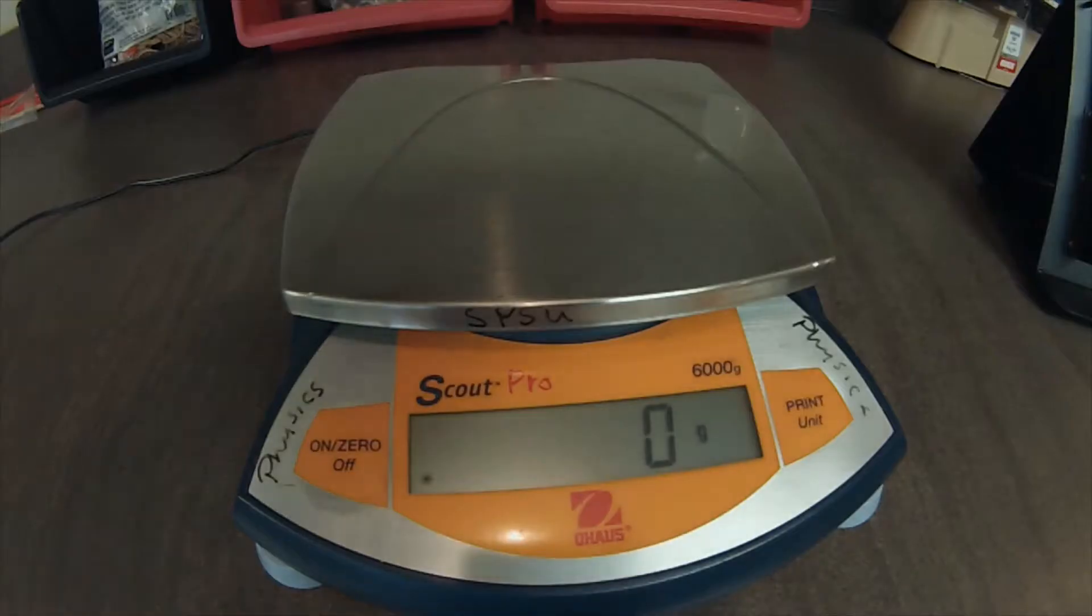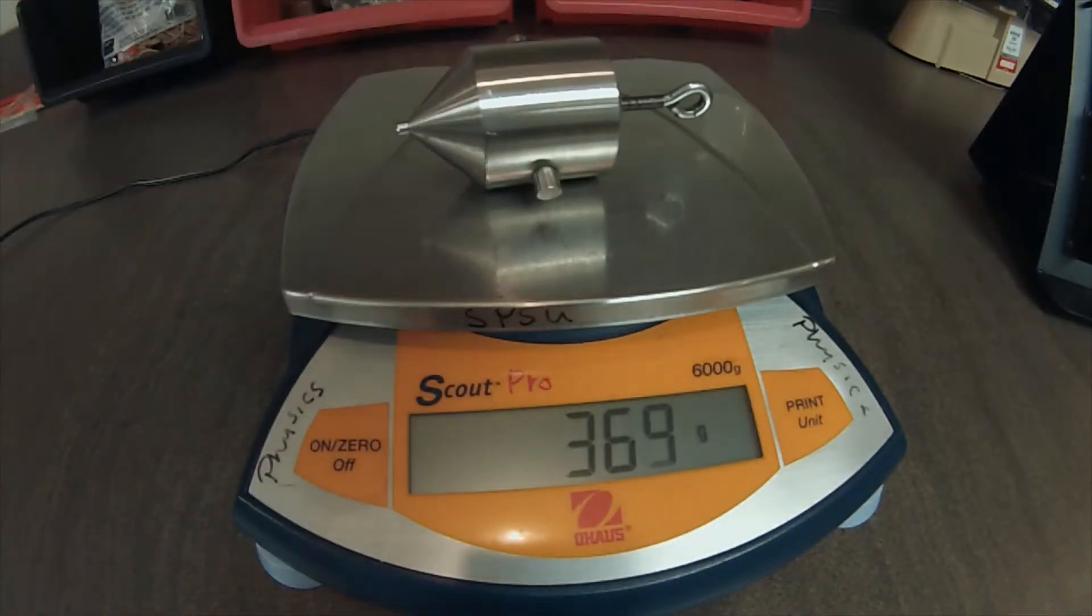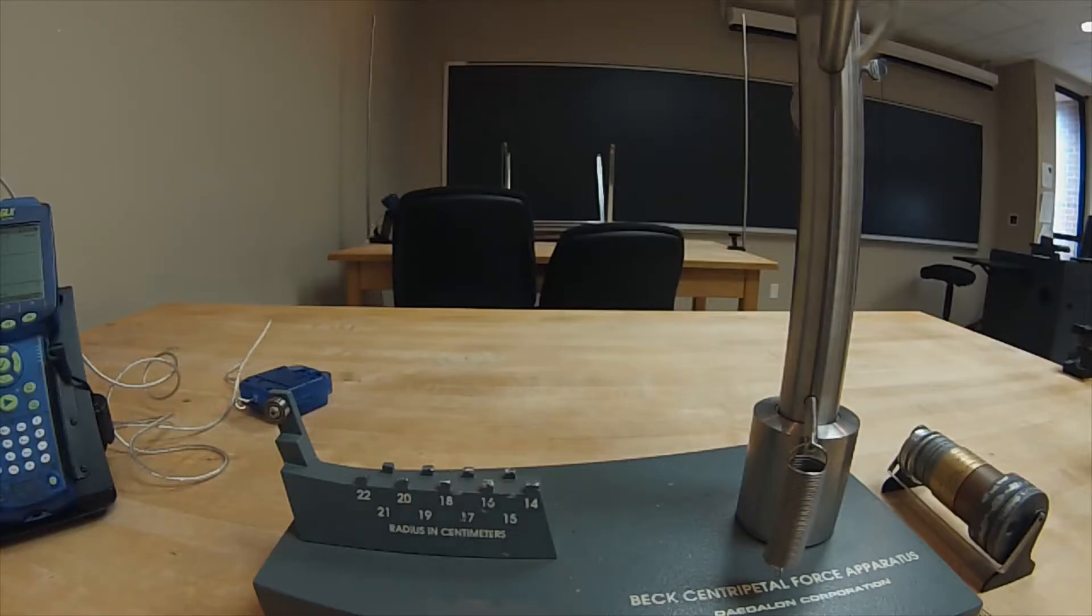Then to determine the mass of the bob, we'll utilize the electronic balance. With the mass recorded, we'll rehang the silver bob.